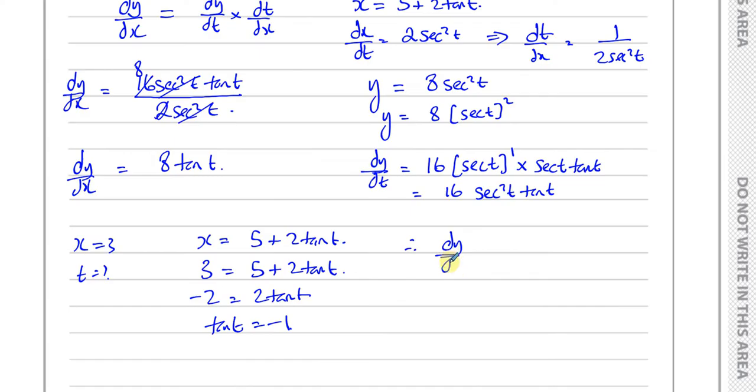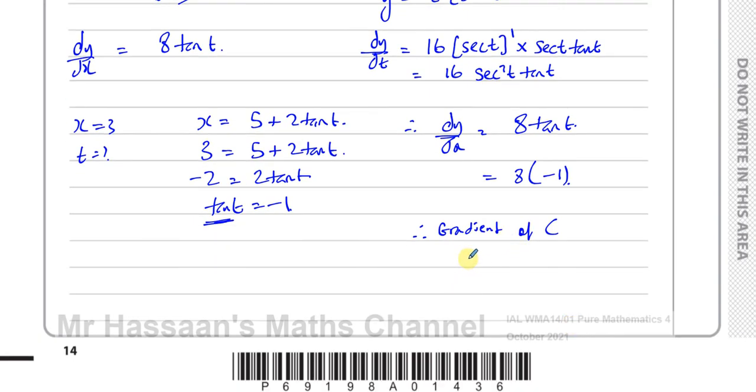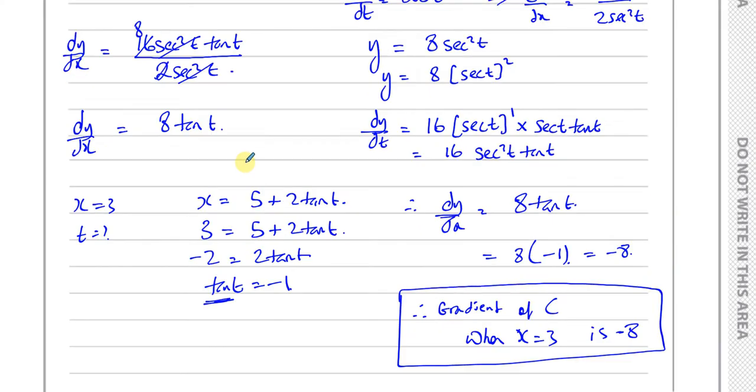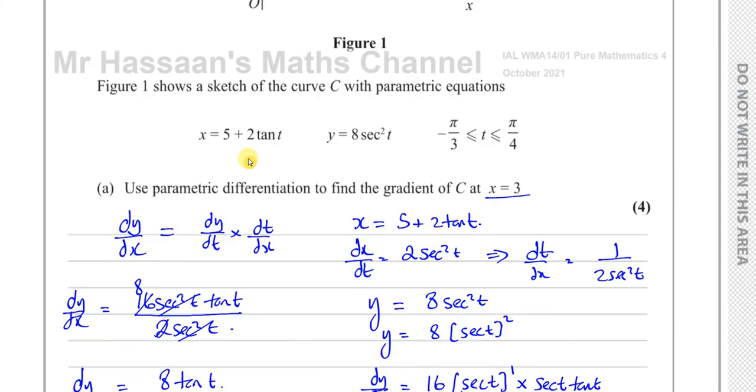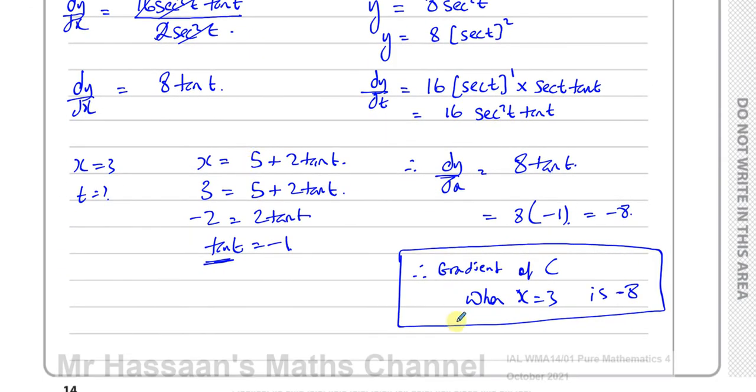So therefore, we can say dy dx is equal to 8 times tan t, which is 8 times minus 1, because tan t is equal to minus 1. So therefore, we can say the gradient of C when x equals 3 is negative 8. And there's the answer to question part A of this question 5. And now I'm going to go on to part B.